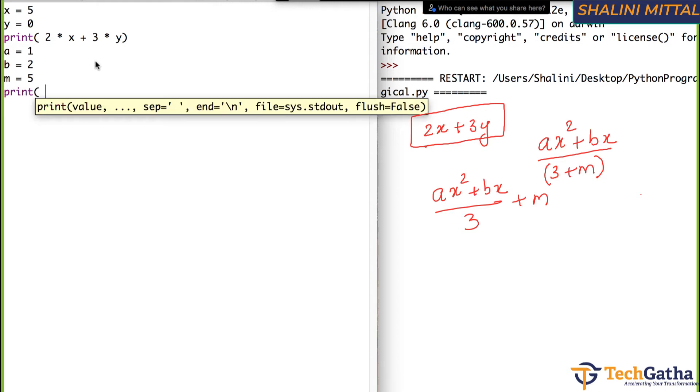I just declare the variables and m equals to 5. And say for example, I want to write this expression a x square plus b x. So a into x to the power 2 or you can also write x into x, your choice, plus b into x. Now this has to be inside a whole round bracket.